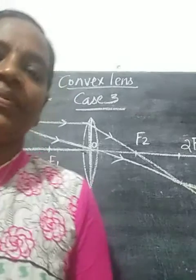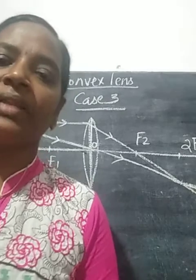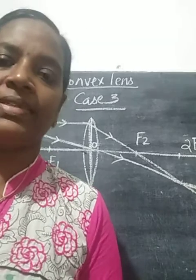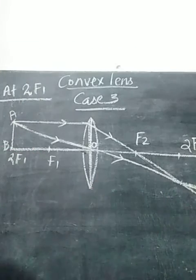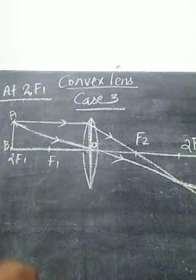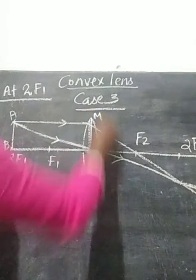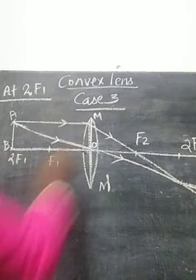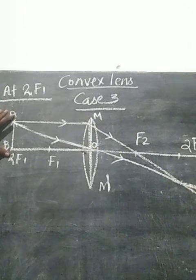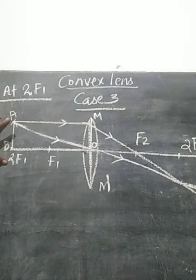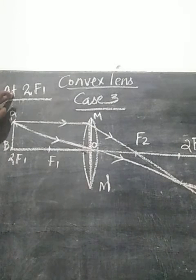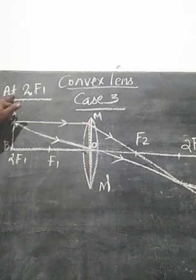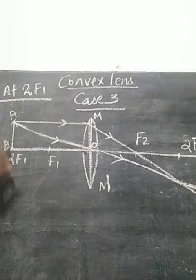Now we study case number 3 of a convex lens. The ray diagram is ready with a convex lens having an aperture MM'. O is the optical center. AB is the object that is placed at 2F1.